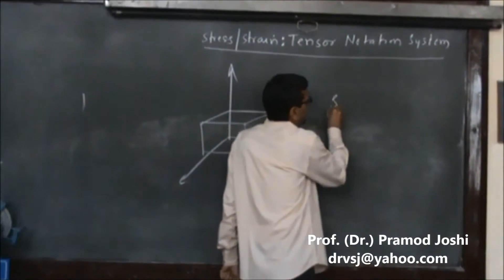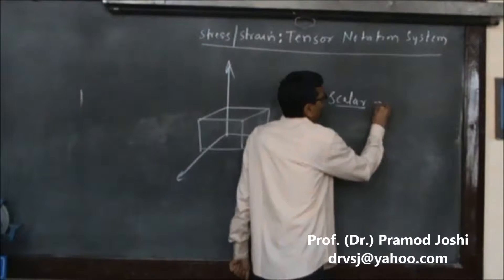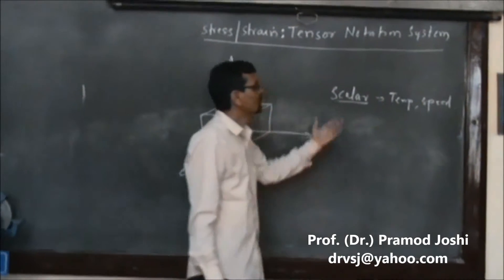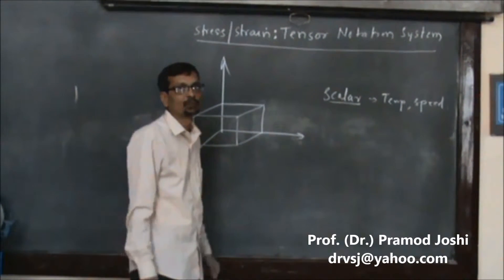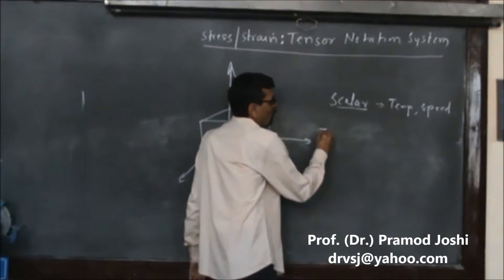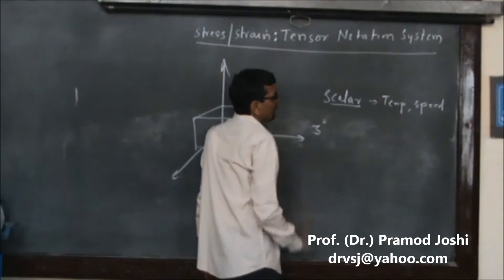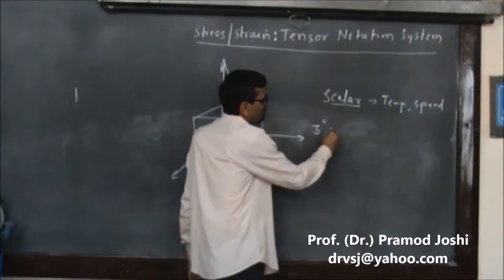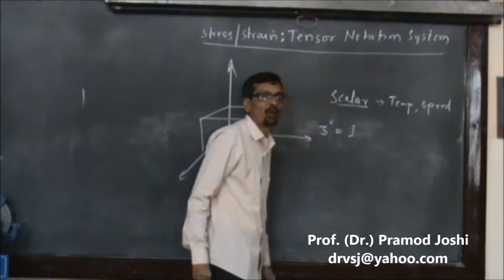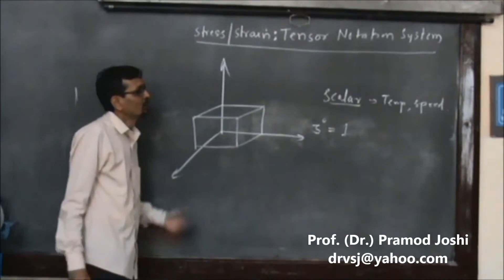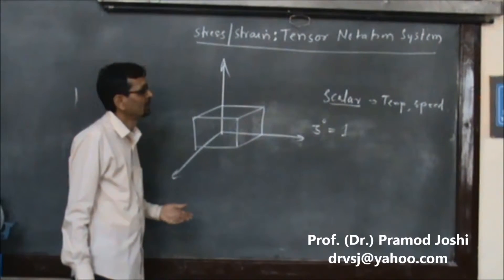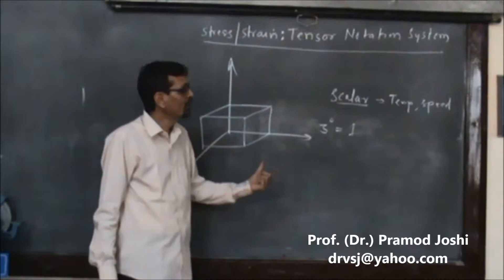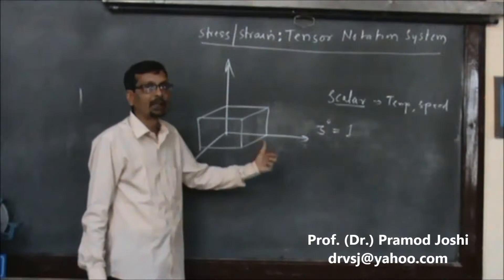If we take a scalar like temperature or speed, in tensor notation system they can be taken as tensors of the 0th order. For three mutually orthogonal planes, since scalars are tensors of the 0th order, 3 raised to 0 gives us 1. That means to describe the physical phenomenon of a scalar like temperature or speed, we need to define only one quantity, and that is its magnitude.